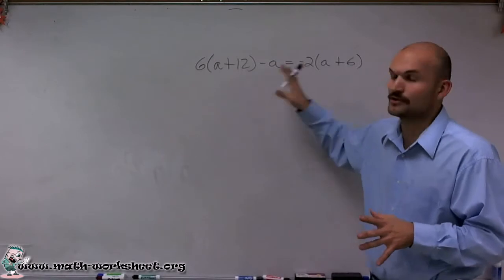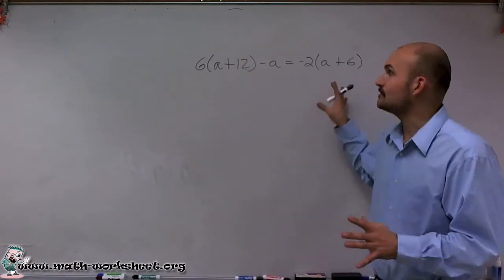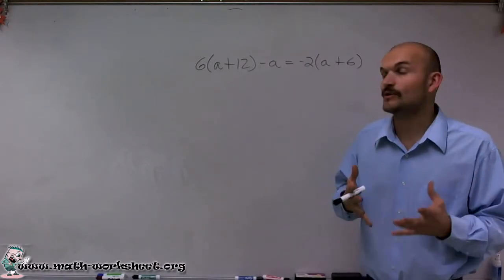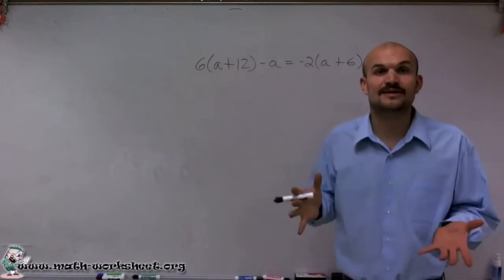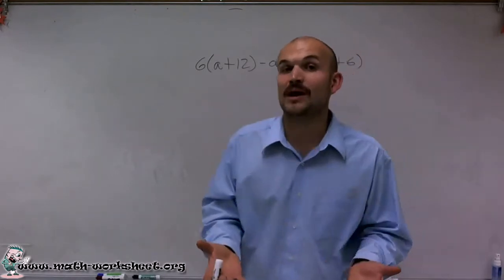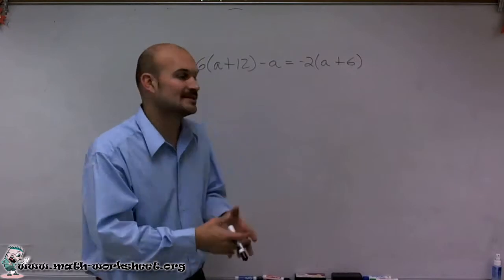So the first thing I do is I notice parentheses. And whenever I see parentheses, I always think order of operations. I always want to look inside my parentheses and see if I can simplify my equation any further. So I look inside this parentheses and this parentheses. And I notice since they're not like terms, I can't simplify it further. The next thing I think about with parentheses is the distributive property. Can I simplify this by distributive property to eliminate the parentheses?